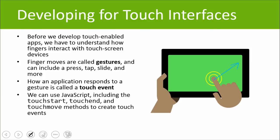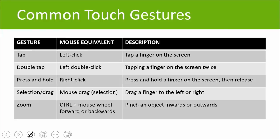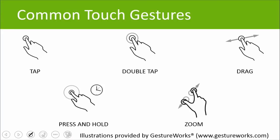We can use JavaScript, including three different methods — touchstart, touchend, and touchmove — to create touch events. Here are some common touch gestures: tap is essentially the equivalent of a left click; double tap is a left double click; press and hold is similar to a right click to bring up options; selection or drag is the same as dragging a file across the screen with a mouse; and zoom — with a mouse you hold control and scroll the wheel, but with touch we pinch inward or spread outward.